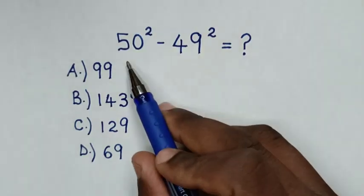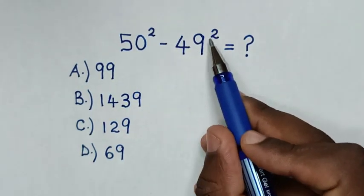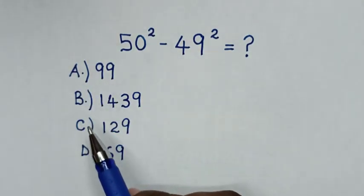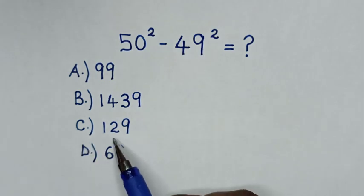Hello, how to solve 50 squared minus 49 squared? Select from the answers: A) 99, B) 1439, C) 129, D) 69.